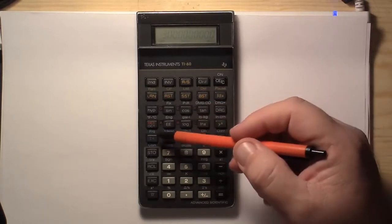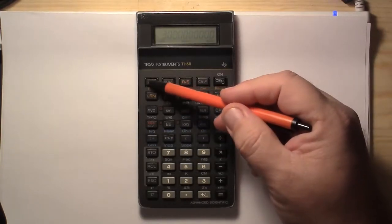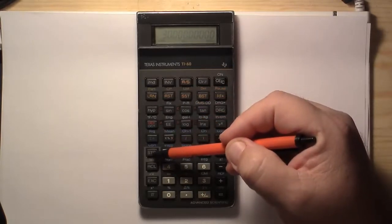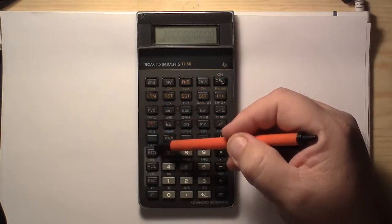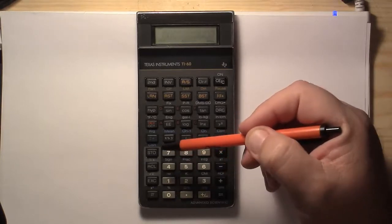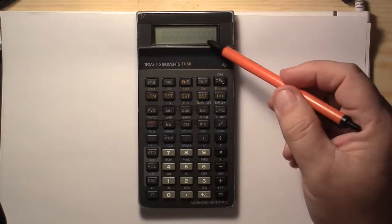Now we want to clear out our numbers that are already in there, and we do that by pushing our second button, and then we want to access the CSR, which is this store. And then that will clear it out.